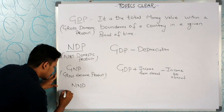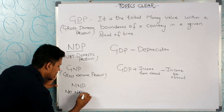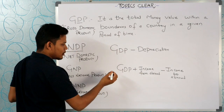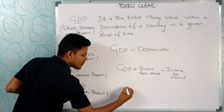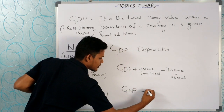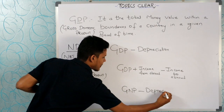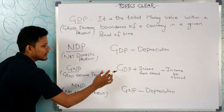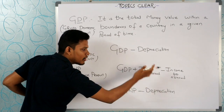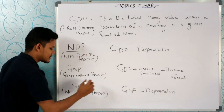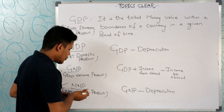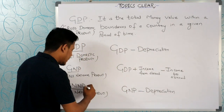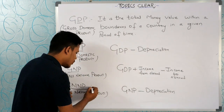NNP is Net National Product. We take GNP minus depreciation. So NNP equals GDP plus income from abroad minus income to abroad, minus depreciation. NNP is the accurate measure to decide what is the income of a country.